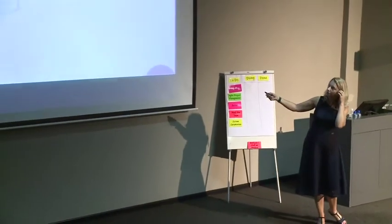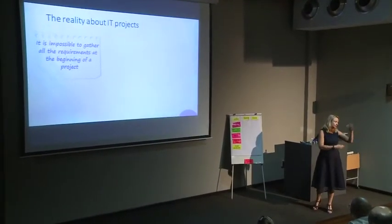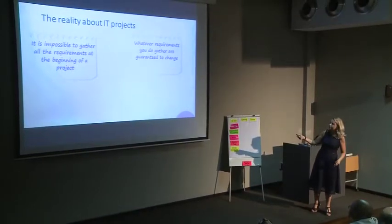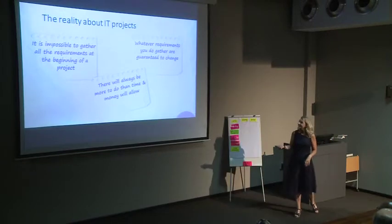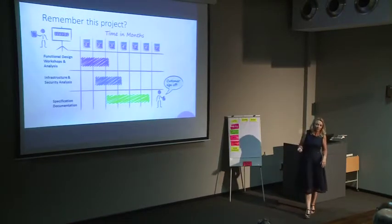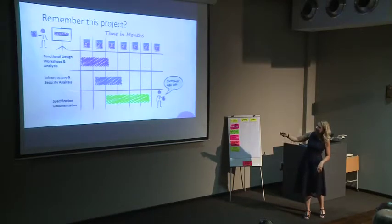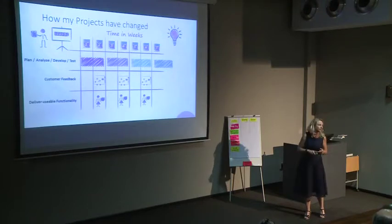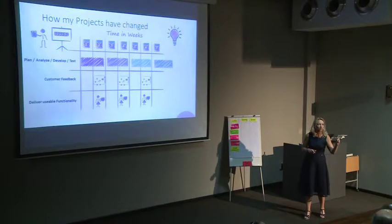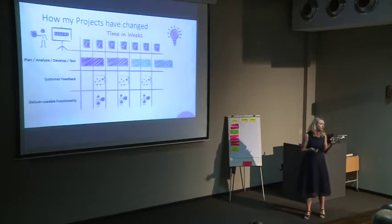Reality about IT projects: it's impossible to gather all the requirements at the beginning of a project — business thinks they know what they want and then halfway through they realize they also want 50 other things. Whatever requirements you do gather are guaranteed to change, and there will always be more to do than time and money will allow. Remember that first project I told you about? Here's how my projects have changed: instead of months, we now have time in weeks. For every two-week sprint we do planning, analyzing, developing, and testing. As a team we work together toward a shared goal, get customer feedback at the end of two weeks, and may deploy new functionality every two weeks.